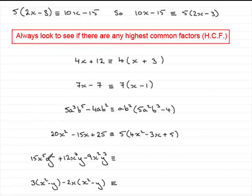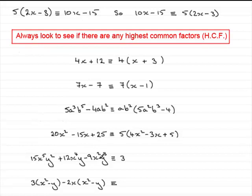With this next example I've gone for three terms again, and it's similar to the previous one with letters. As for the numbers 15, 12, and 9 — the highest number that goes into all three is 3. And what about the letters? Is there an x in every term? Yes — but more than that, x squared appears in each of the three terms. Is there an x cubed in each term? No — there's x cubed in the first two but only x squared in the last. So x squared is the common factor. And for y's, the maximum of one y appears in each term — not y squared — so just y. So the HCF is 3x squared y.